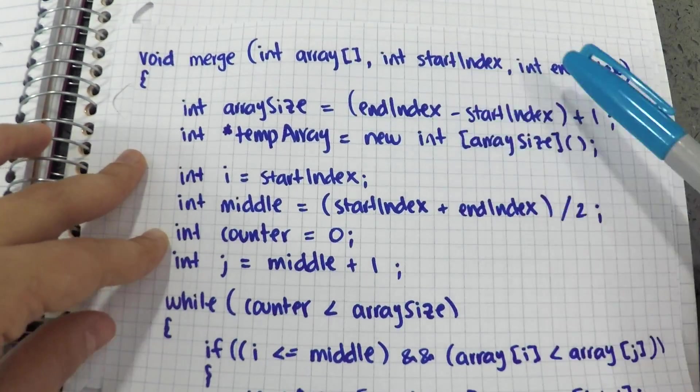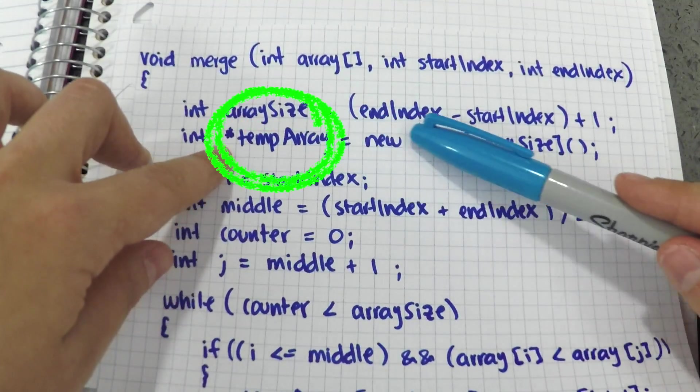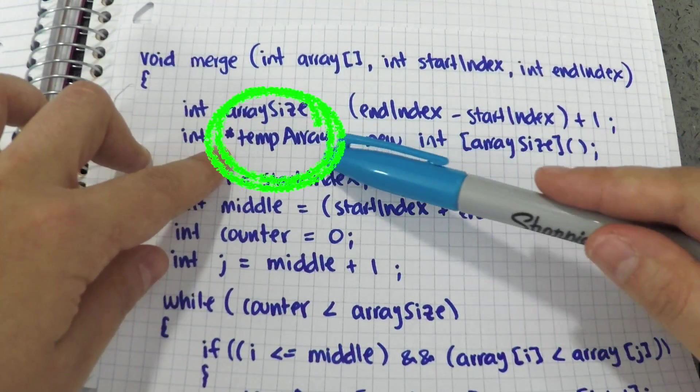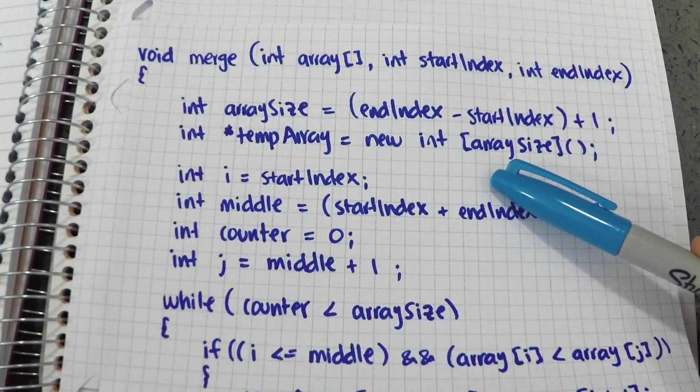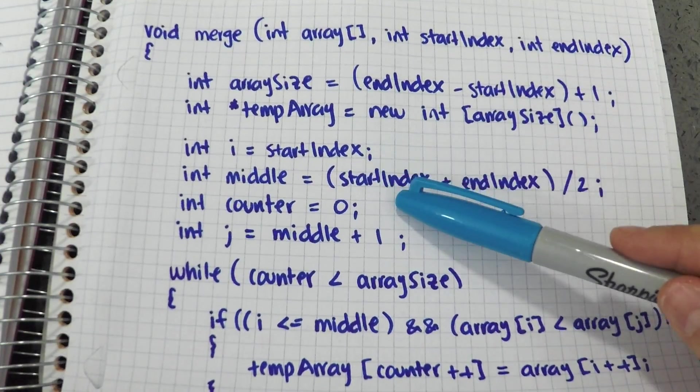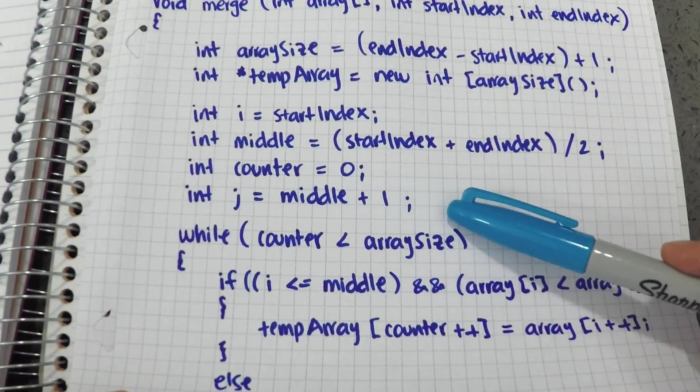In Merge, first, I find the size of the array and create a temporary array. Notice it is a pointer so that it is dynamic and its size can be a variable. Then, I create an index, find the new middle index, and create counters to keep track of the parts of the array.